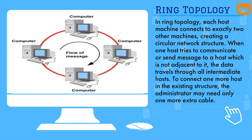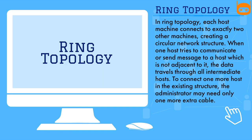In ring topology, each host machine connects to exactly two other machines, creating a circular network structure. When one host tries to send a message to a non-adjacent host, the data travels through all intermediate hosts. To connect one more host in the existing structure, the administrator may need only one extra cable.